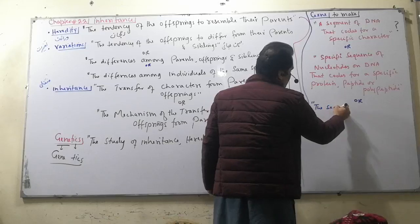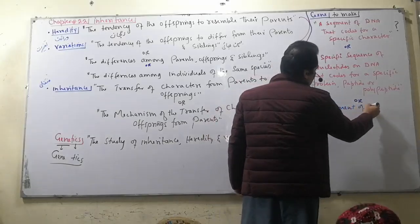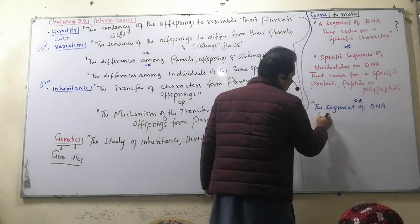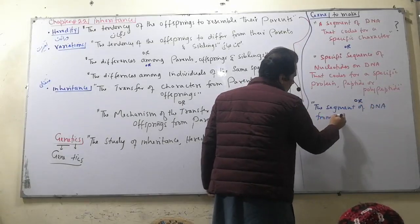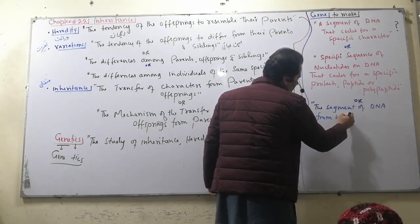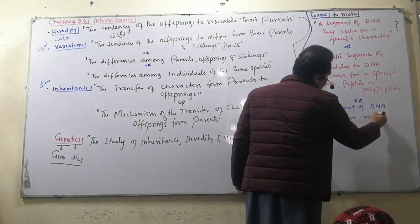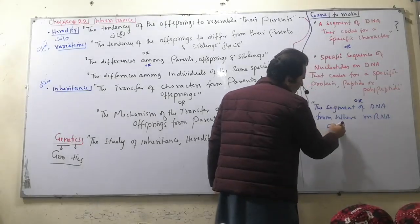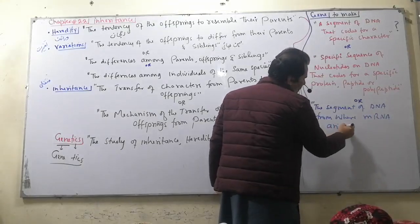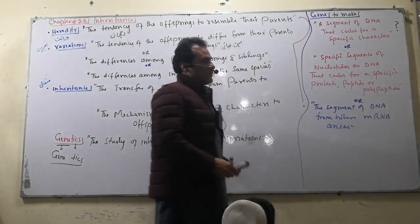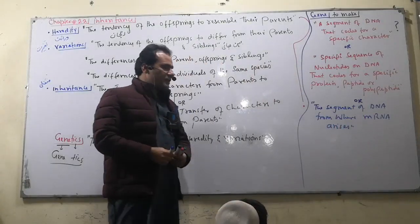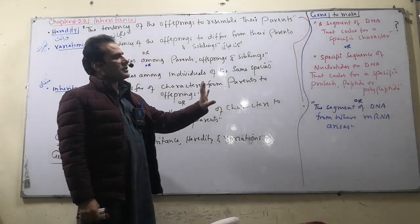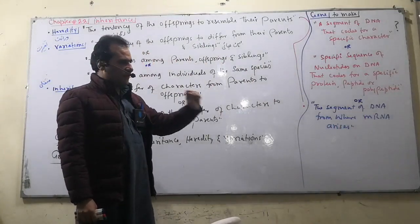A gene is a segment of DNA. From that DNA segment, mRNA arises. Speaking of DNA, messenger RNA is produced — there is a technically sound definition for this process.